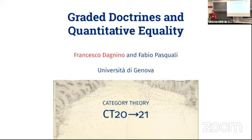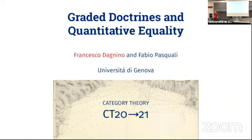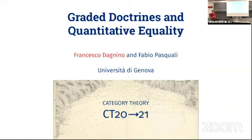Let me start by briefly sketching what I have in mind when I talk about quantitative reasoning. To summarize the quantitative approach by a slogan: in a quantitative approach, we want to measure how much a property holds, rather than just saying whether it holds or not. This can be done in several ways — for instance, using non-negative real numbers measuring how far an element is from satisfying the property, or numbers between zero and one measuring the probability that an element satisfies a given property. A common feature of all these continuous settings is that we compose quantities by means of some kind of symmetric monoidal operation.